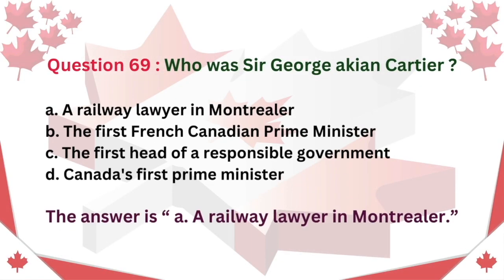Question 69. Who was Sir George-Étienne Cartier? A. A railway lawyer in Montreal B. The first French Canadian Prime Minister C. The first head of a responsible government D. Canada's first Prime Minister.